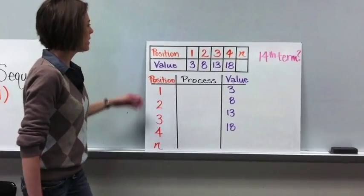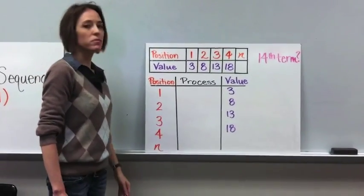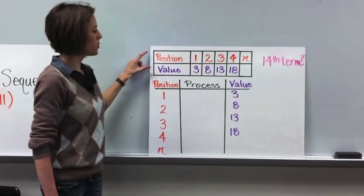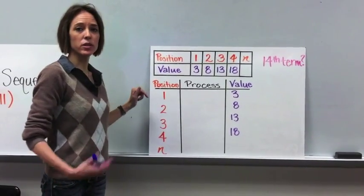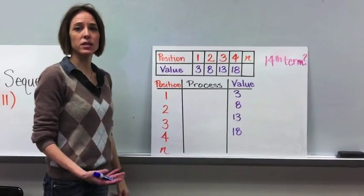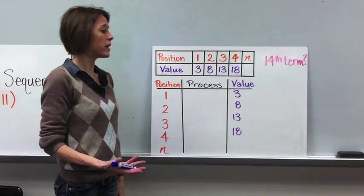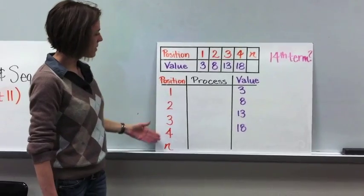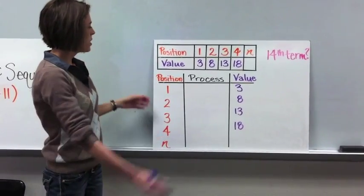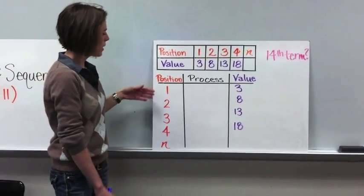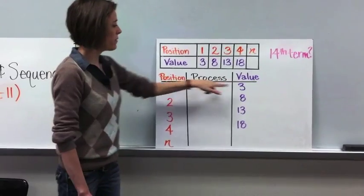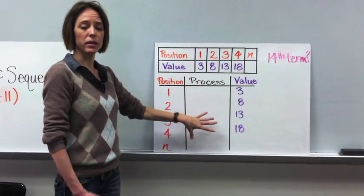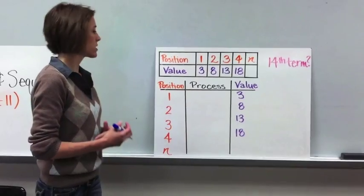So in example one, it's giving you the first four terms in a sequence. What we want to do is put this information into a table so that we can determine the process and get the expression that's used to find it. Go ahead and draw your table like this on your paper. We want the position number and then the value, and we're going to leave the process in the middle blank, so that we can find out what the process is.